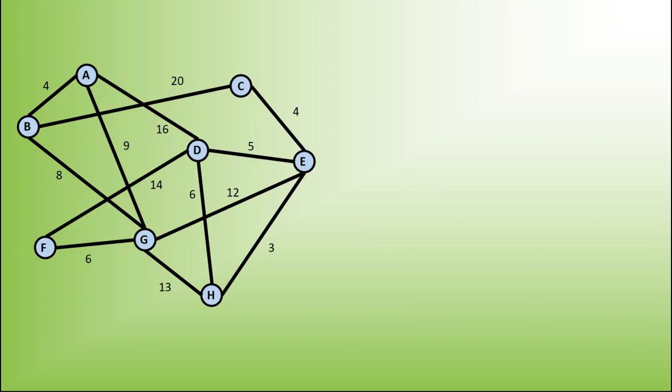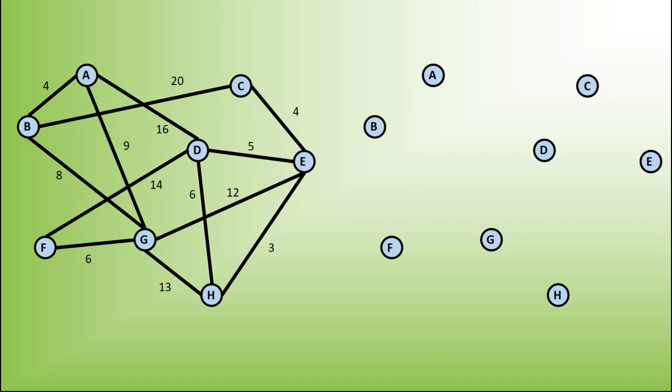We'll start with an exact copy of all of the vertices. The beginning of the algorithm says that we can choose any vertex — I'm going to choose vertex D. I consider all edges that are coming out of it and I choose the one of minimum weight. In this case it is 5, going from D to E, so I'll include that in my minimum spanning tree.